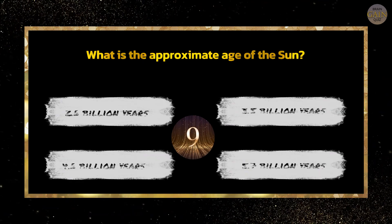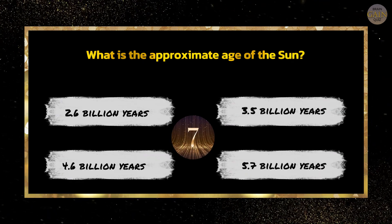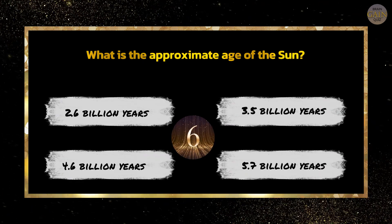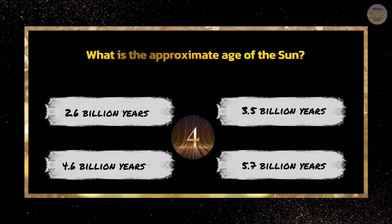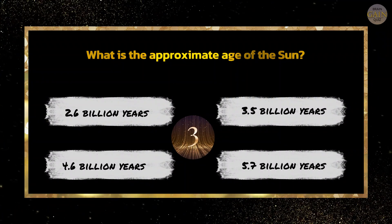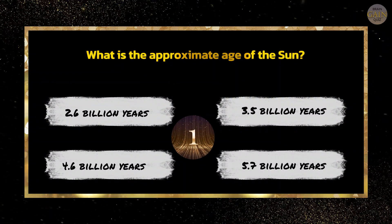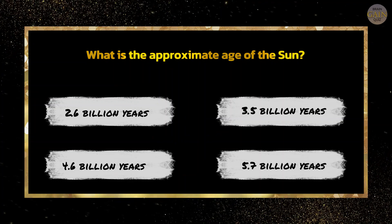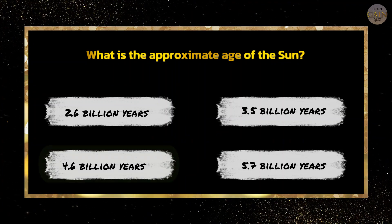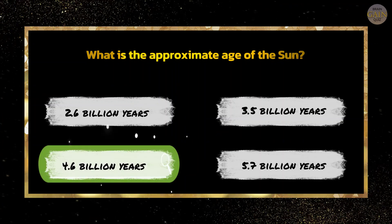What is the approximate age of the Sun? 4.6 billion years.